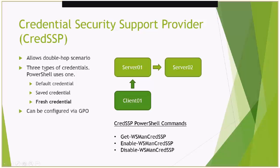The Windows platform has several different types of credentials. The default credential is basically the credential you're currently logged into Windows with. Saved credentials are credentials stored in the Windows credential vault — if you don't like typing passwords a lot, you might use the vault to store them. Fresh credentials are what you get any time you create a credential object from a fresh username and password input by an end user — the Get-Credential command in PowerShell is an example of how to get a fresh credential.